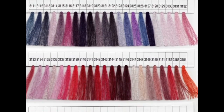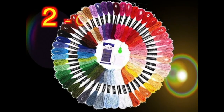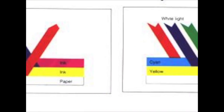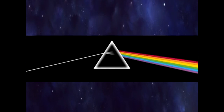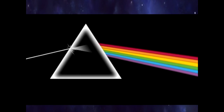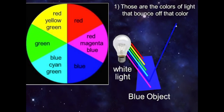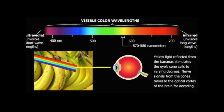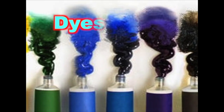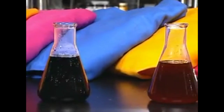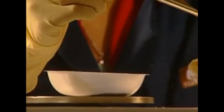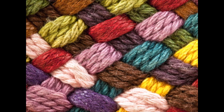Next, we want color. Step 2: Color threads. Color is bounced light. White light is actually a rainbow of colors. Most of the colors are absorbed, and we see the color that bounces back to our eyes. Dyes are chemicals that change the chemistry of cloth so different light waves are absorbed and reflected.